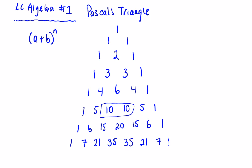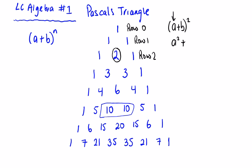Let's start with a simple one — (a + b) squared. The squared row is row 2 if we call the top row 0. At this point in Leaving Cert Algebra, if you don't know (a + b) squared you need to revisit your Junior Cert algebra. It's a squared plus ab twice — so that's 2ab — plus b squared.